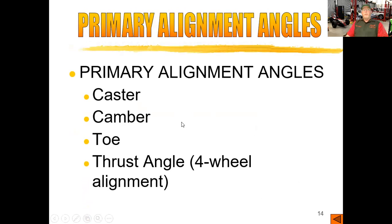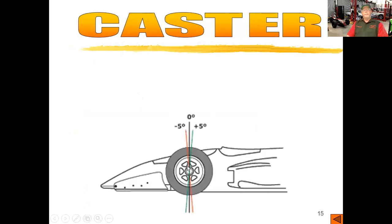The primary alignment angles we're going to concentrate on in this video are caster, camber, toe, and thrust angle as it applies to four-wheel alignments. Caster is the vertical tilt of the steering axis as compared to vertical. If our upper ball joint is straight up and down with our lower ball joint, it is said to have zero degrees caster. If the upper ball joint is behind the lower ball joint — so the axis is tilted back towards the center of the vehicle — it would be positive caster. If our upper ball joint or strut assembly is pointed forward of vertical, towards the front of the vehicle, that is said to have negative caster.